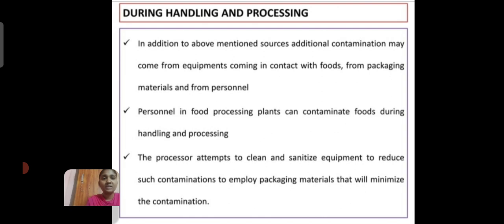In addition to the above-mentioned sources, additional contamination may come from equipment coming in contact with food, from packing material, and from personnel. The personnel in food processing plants can be a source of contamination during handling and processing. Processors attempt to clean and sanitize equipment to reduce such contamination and to employ packing material with minimum contamination. Thank you.